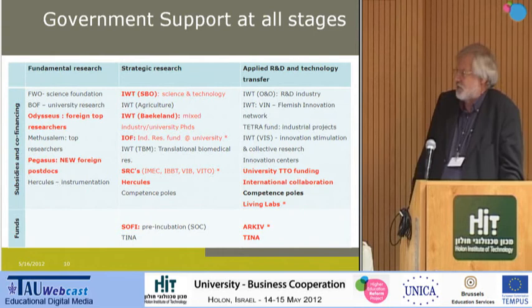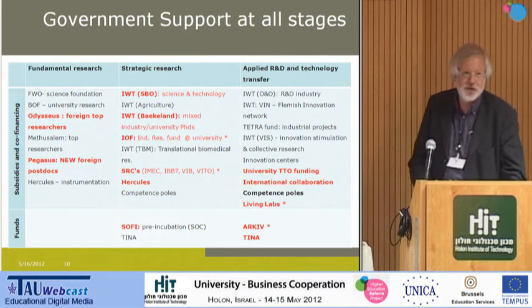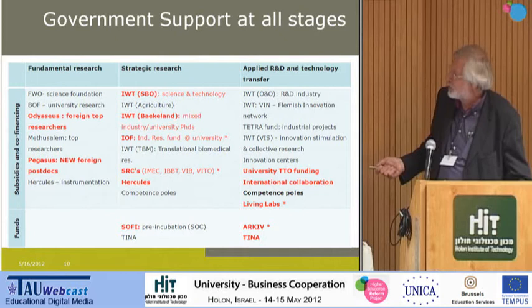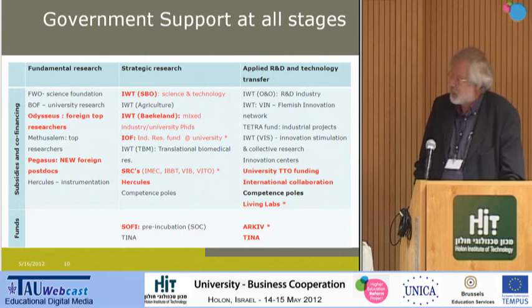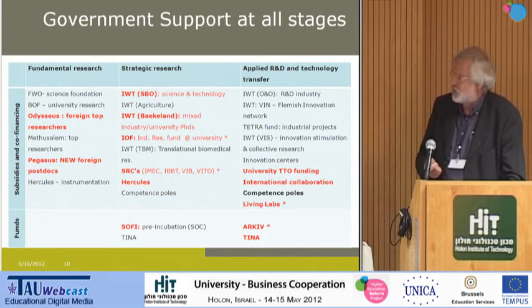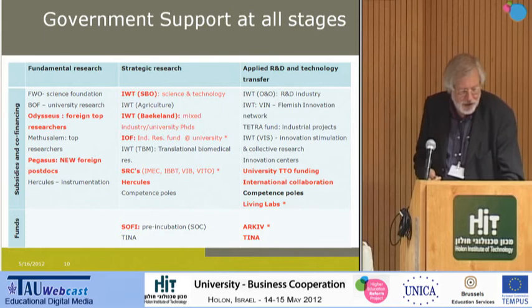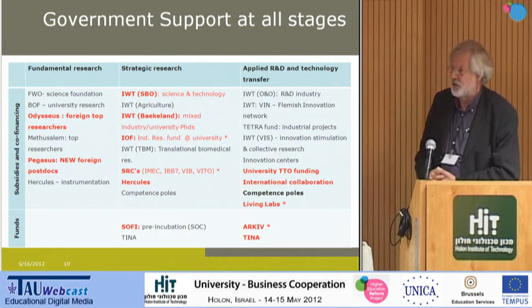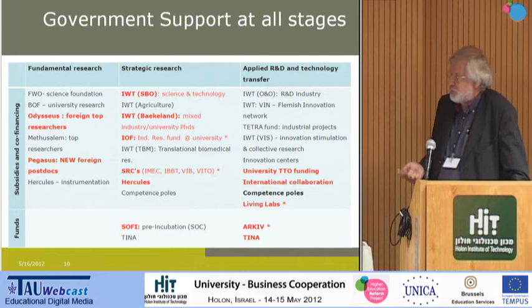The government authorities cover this trajectory rather well. At the left-hand side is fundamental research. I'll highlight two programs that might be interesting for international networks such as the ones that organized this workshop. The Odysseus formula is a program to attract foreign top researchers. They not only get a decent salary, but also a lot of money to start up a new research department and working costs for their first five years — a real selective but very interesting program. At a lower level, the Pegasus program is for foreign postdocs who want to share their insights for a period of months up to three years.